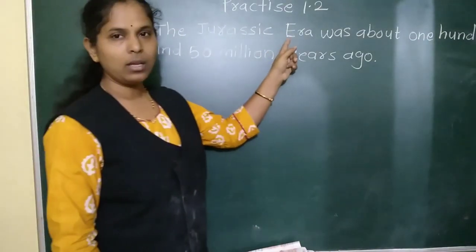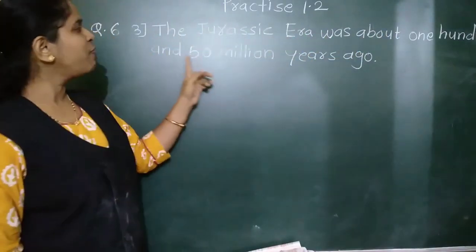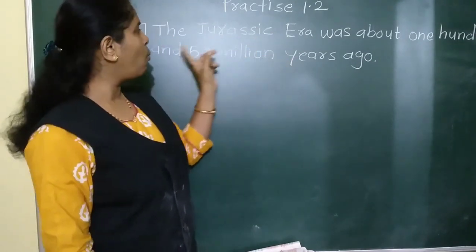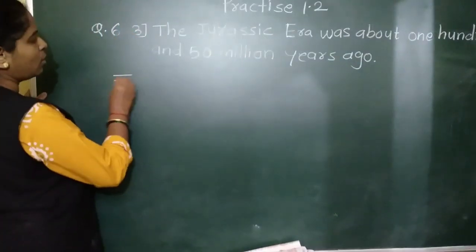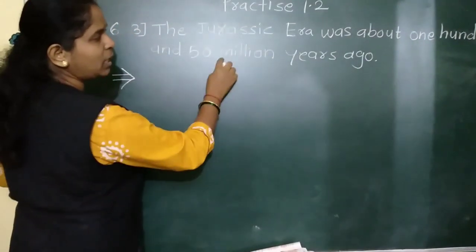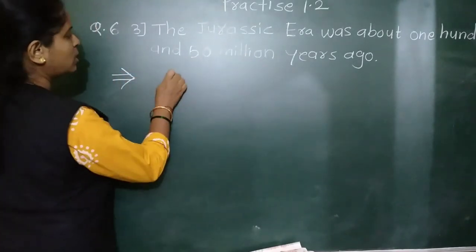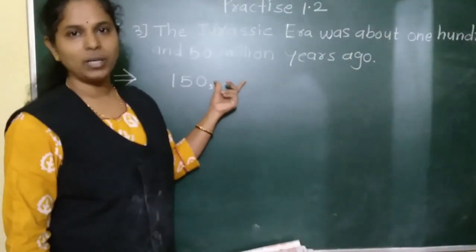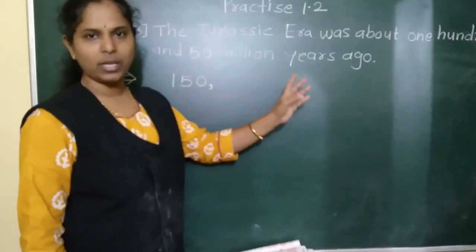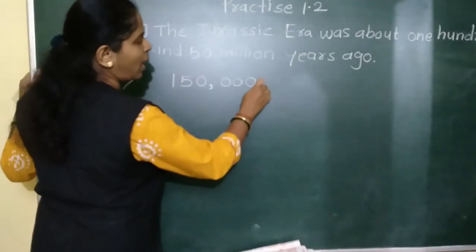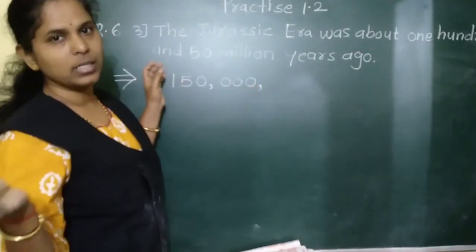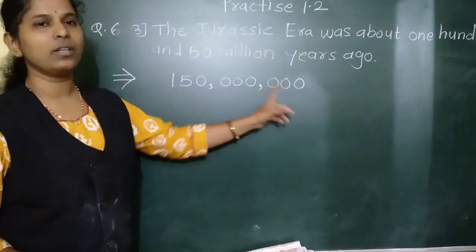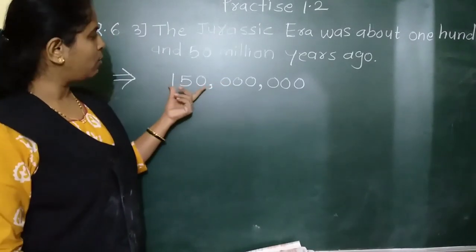Question number 6, third: the Jurassic era was about 150 million years ago. Now, 150 million — in the millions period, three digits are there: 150. In the thousands period, there is nothing, so we write three zeros. In the ones period also, nothing is there, so we write three more zeros. So 150,000,000 is the numerical form of 150 million years.